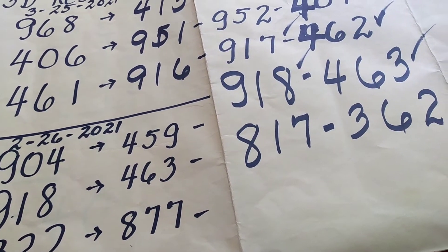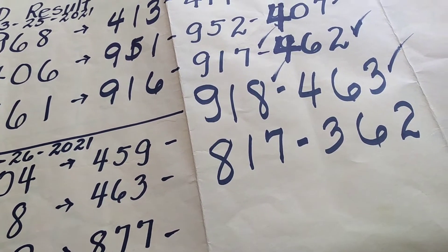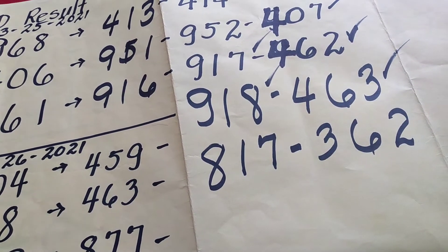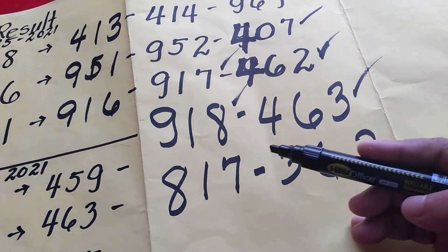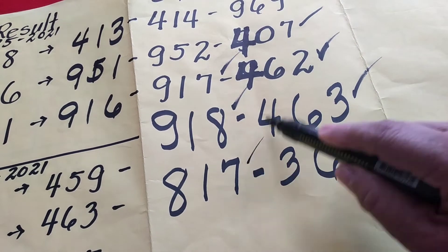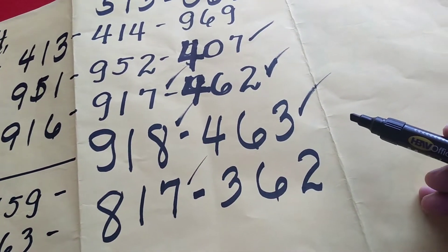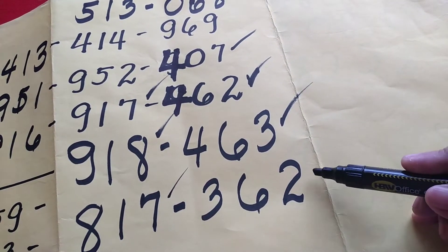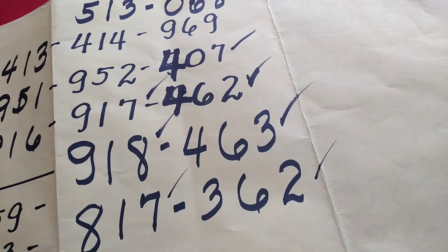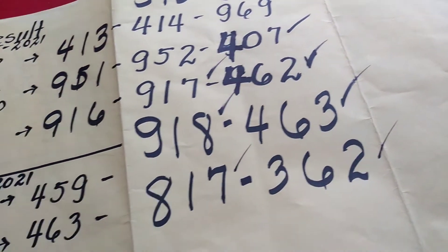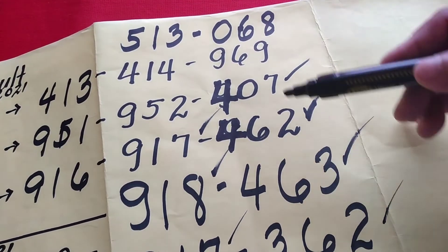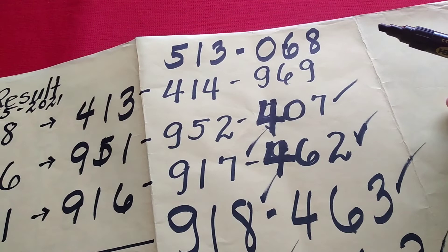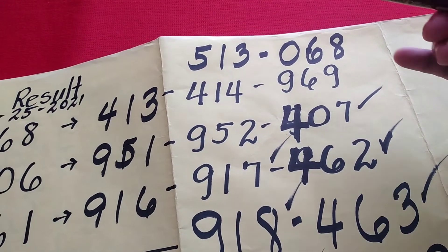So yung 8, 1, 7 hindi pa lumalabas. So baka ito, lumabas rin. At saka ito. So hindi natin alam. Baka ito o di kaya yung mga numerical equivalent. At saka ito pa.